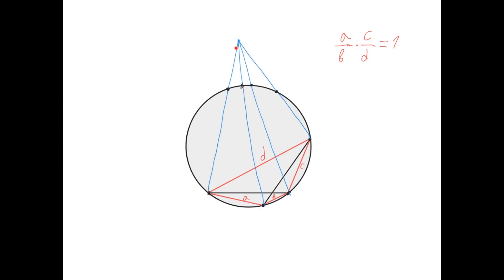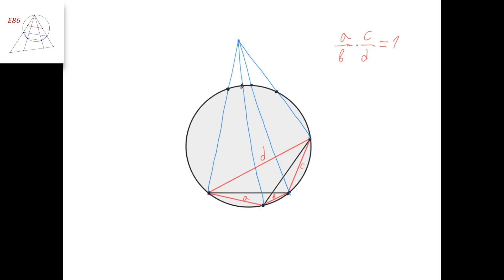Let's take a random point in the plane and connect it with lines to the four points of the quadrilateral. Then take the second intersection points and they form another quadrilateral. Because of the properties of the cross-ratio, we know that the cross-ratio of the four points in this quadrilateral equals the cross-ratio of the four points here. And therefore, if this is a harmonic quadrilateral, then this here is also a harmonic quadrilateral.